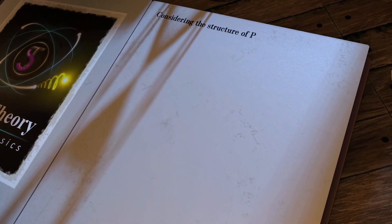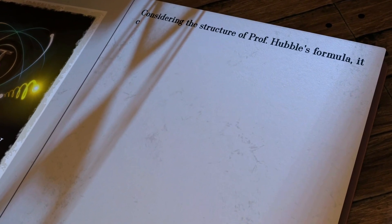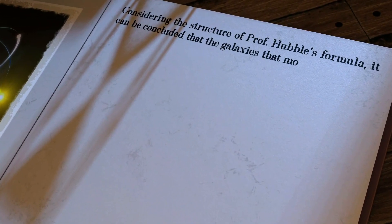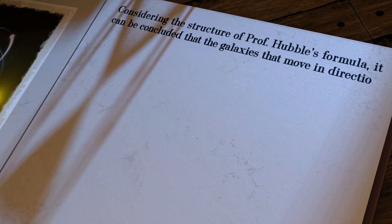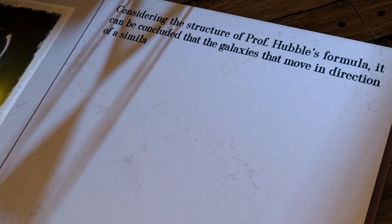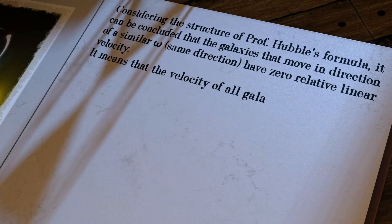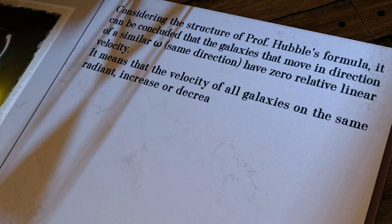Considering the structure of Professor Hubble's formula, it can be concluded that galaxies that move in the direction of a similar omega — the same direction — have zero relative linear velocity. It means that the velocity of all galaxies on the same radiant increase or decrease simultaneously.